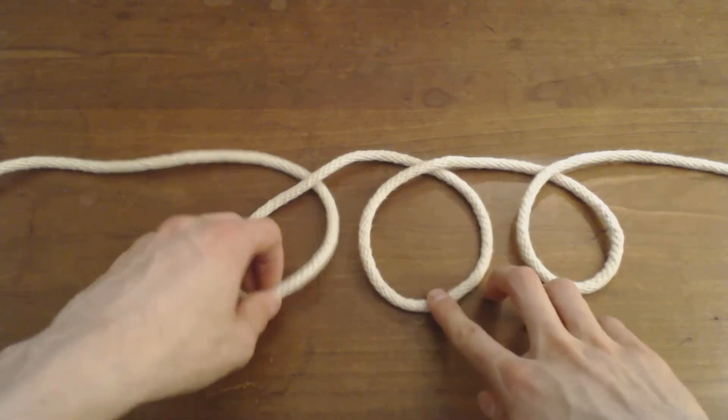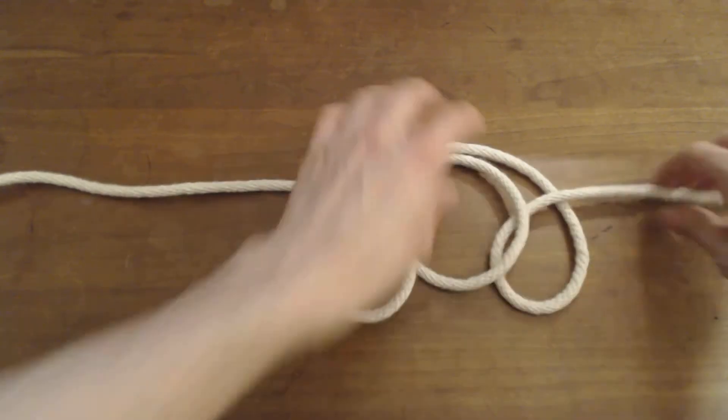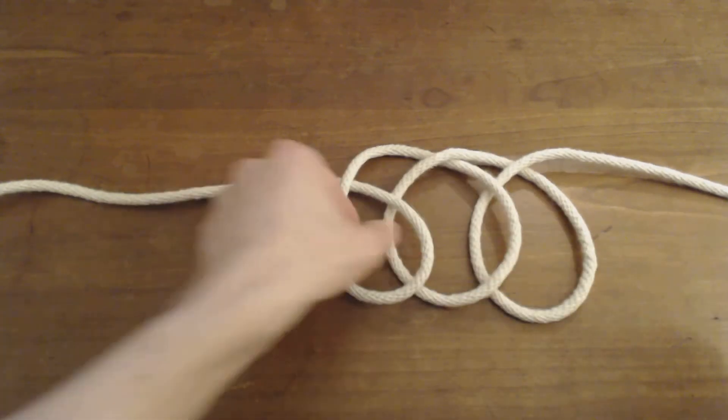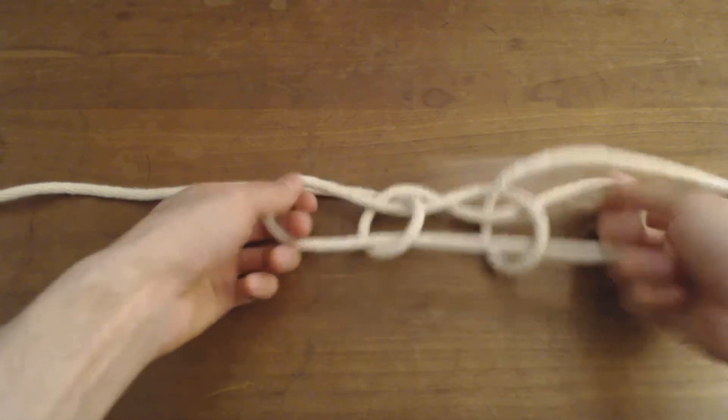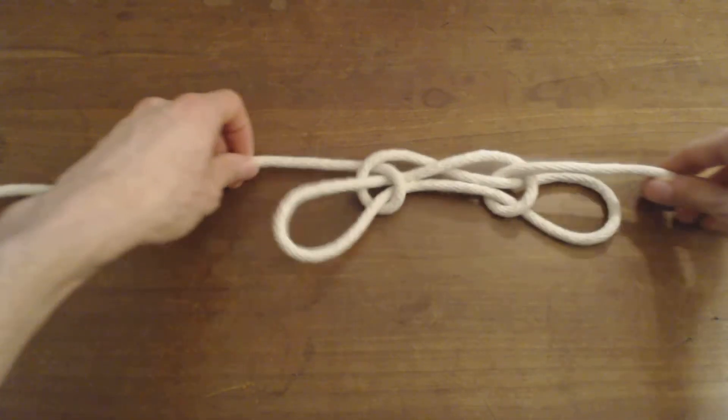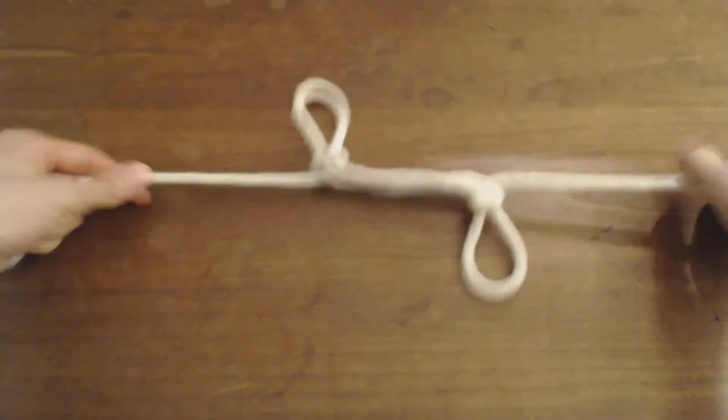you can overlap them one over the other like that, and then take both sides of the middle loop and pull them through the outside loops, and then tighten, and there you go.